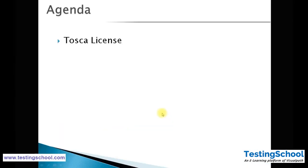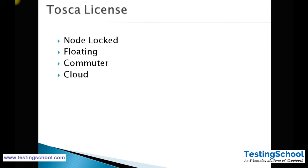In today's session, we will look at a concept called Tosca licensing. There are four types of licenses available in Tosca: Node Lock License, Floating License, Commuter License, and Cloud License.